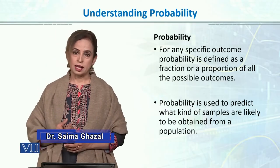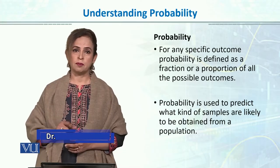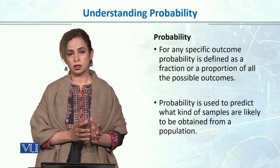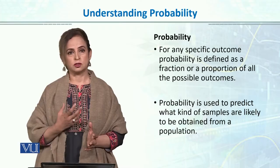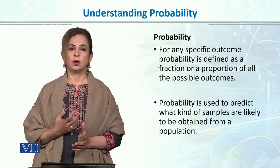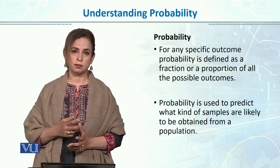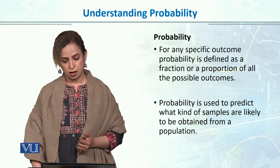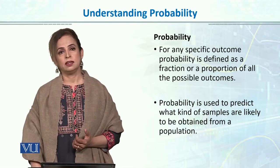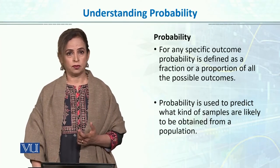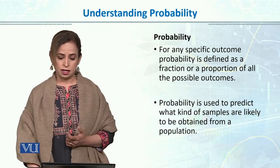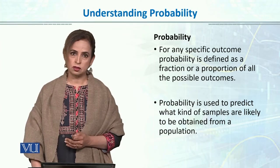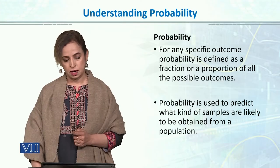Probability allows us to determine what kind of sample we are going to draw from the population. Because we do not study the population directly, but we draw a sample. For any specific outcome, probability is defined as a fraction or a proportion of all the possible outcomes.